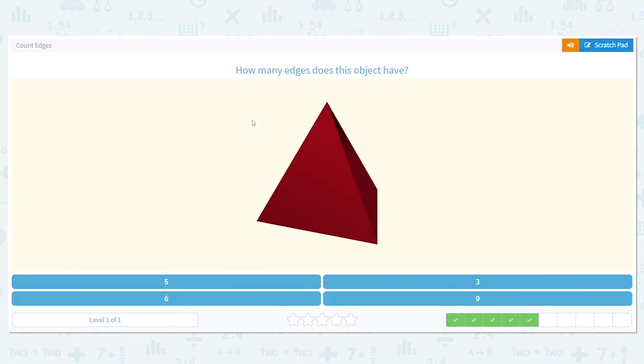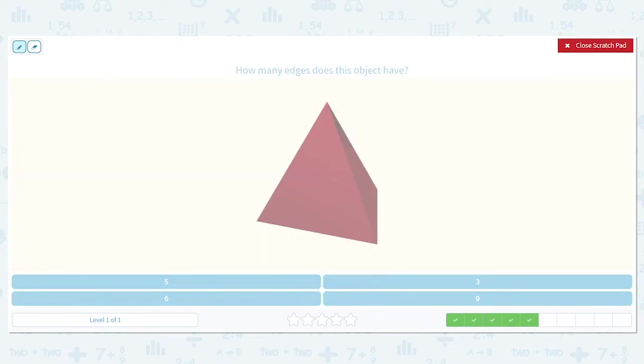Triangular pyramid. What is the base? The bottom is a triangle. So top to bottom, we have one, two, and three. And then we have four, five. And the other side of the triangle on the base we can't see is six. So if you remember from the first one, we had three on the top, and three on the bottom with the base. And that's how we get six.